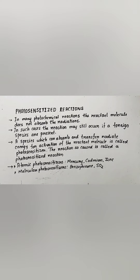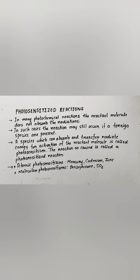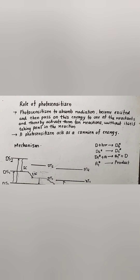We normally use two types of photosensitizers. The first is the atomic photosensitizer — for example, mercury, cadmium, and zinc. The second type is molecular photosensitizers, such as benzophenone and sulfur dioxide.